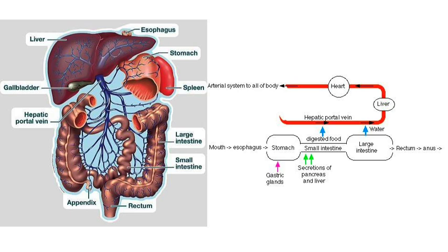The hepatic portal vein is critical in detoxification as it brings blood from the intestines containing ingested toxins directly to the liver. Since the blood from the intestines travels through such a short vessel to the liver, detoxification can occur quickly after the toxins enter the bloodstream.